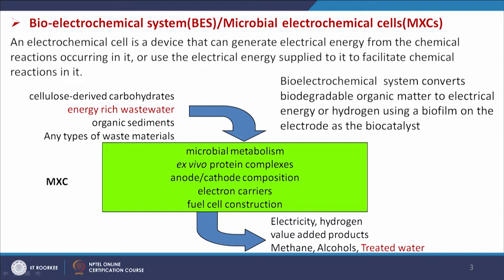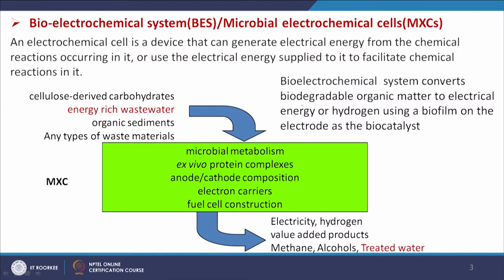The term bio electrochemical systems: we have already studied electrochemical systems and we know that in an electrochemical system either the chemical energy of the solution is converted to electrical energy or vice versa. The 'bio' word added means here the reactions will take place with the help of microorganisms, which will catalyze the reactions for energy production and degradation of organic compounds. Bio electrochemical systems convert biodegradable organic matter to electrical energy or hydrogen using a biofilm on the electrode as the bio catalyst.